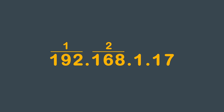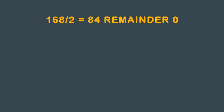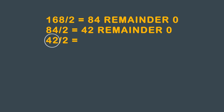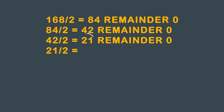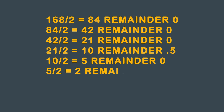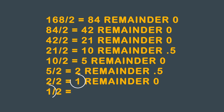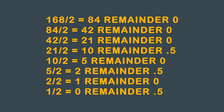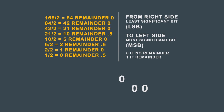Now take the 168 in the second octet and divide by 2 in the same manner as the first octet. Take 168 divided by 2: you get 84, no remainder. Take 84 divided by 2: you get 42, no remainder. Take 42 divided by 2: you get 21, no remainder. Take 21 divided by 2: you get 10 with a remainder of 0.5. Take 10 divided by 2: you get 5, no remainder. Take 5 divided by 2: you have a remainder of 0.5. Take 2 divided by 2: you get 1, no remainder. Take 1 divided by 2: you get 0 with a remainder of 0.5. Working from the LSB to the MSB, taking no remainder as 0 and a remainder value as 1, you get 1 0 1 0 1 0 0 0.